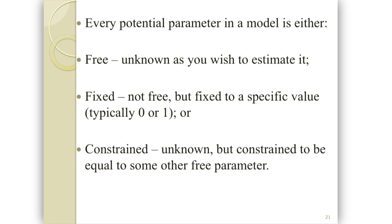Free parameters are parameters I'm interested in estimating — I will get an estimate of that parameter. Fixed parameters are fixed to some specified value; if I'm not interested in them, I'd fix that parameter to zero, or in some contexts fix it equal to one. In more sophisticated models, we might have constrained parameters fixed to be equal to some other parameter — for instance when comparing two samples.